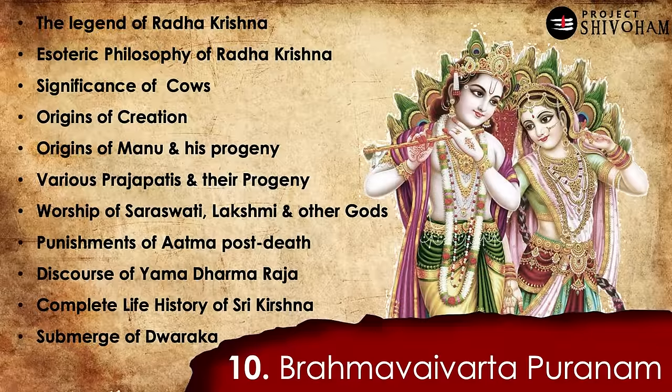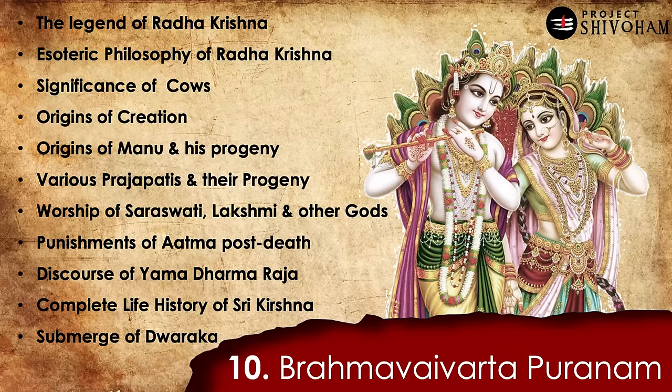Number 10, Brahma Vaivarta Puranam: this Puranam extensively focuses on Sri Krishna and Radha Devi, elaborating at length about the legend of Radha and Krishna, the esoteric philosophy of Radha Krishna, significance of cows, origin of creation, origin of the Manus and their progeny, various Prajapatis and their progeny, worship of Saraswati and Lakshmi and other gods and goddesses, the punishments of Atma post death, the discourse of Yamadharma Raja, complete history of Sri Krishna, and how Dwaraka got submerged in the ocean.